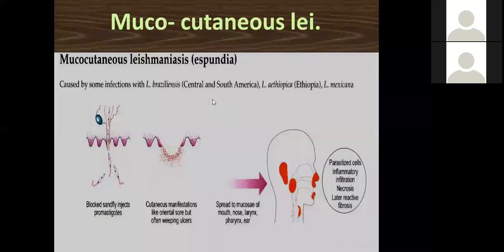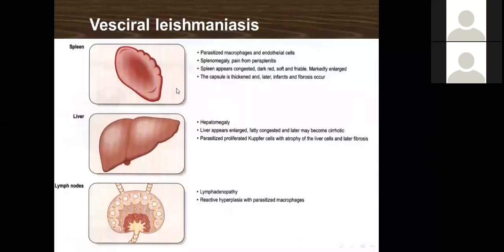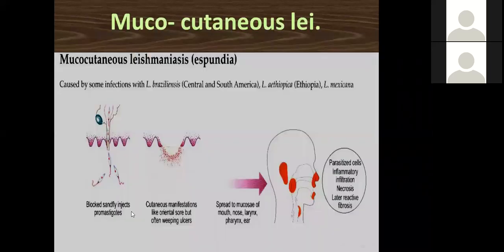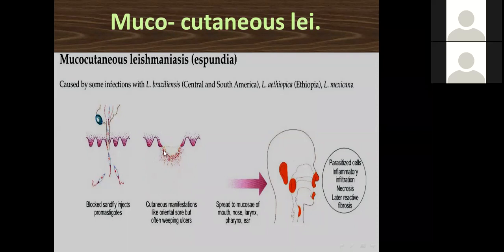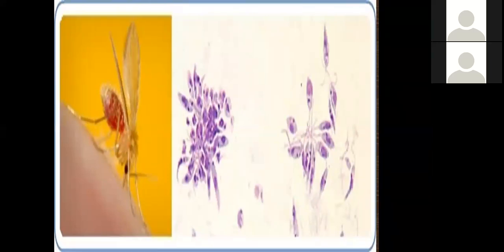For visceral leishmaniasis, macrophage clusters carrying the parasite taken up by engulfment travel to suitable organs. In the case of L. donovani, this causes splenomegaly, hepatomegaly, and lymphadenopathy. For mucocutaneous leishmaniasis, the same mechanism applies but targets the soft tissue of the respiratory system with deeper and wider lesions.